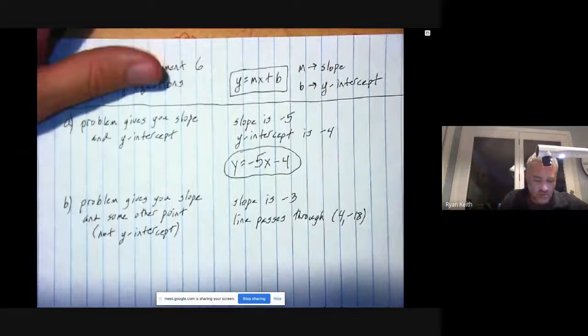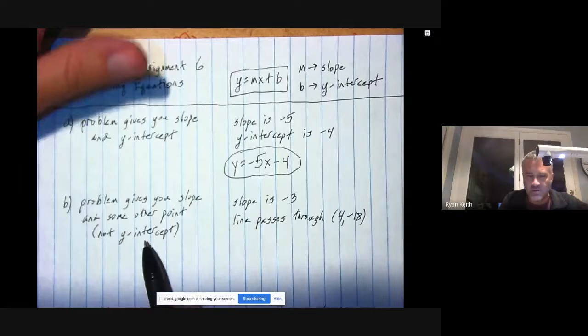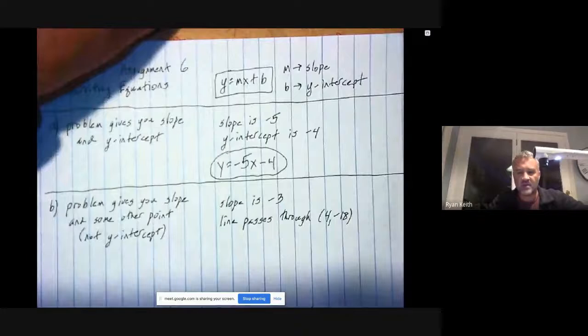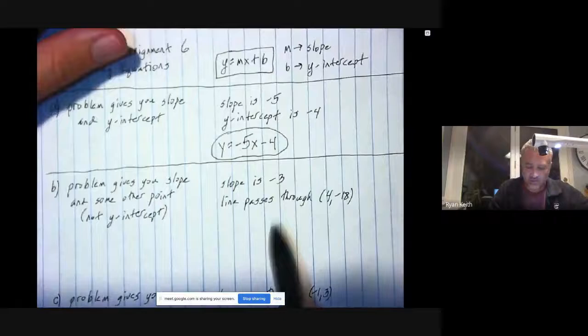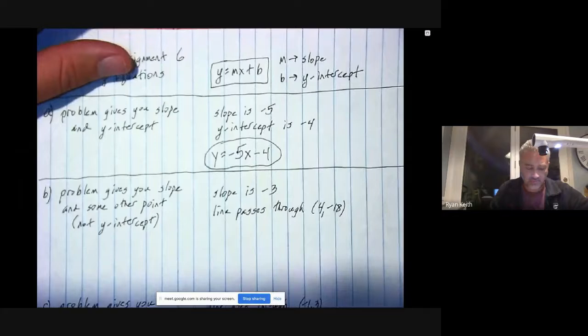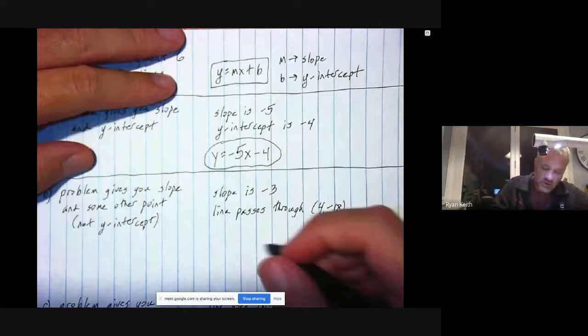Case B: What if the problem gives you the slope but they give you some other point that isn't the y-intercept? For example, what if you're told that the slope of some new line is negative 3 and that the line you're looking for passes through the kind of random point 4 comma negative 18? This is not the y-intercept, so we can't just go to the answer right away, but we do have the slope given to us for free.